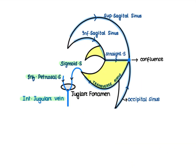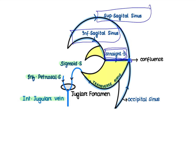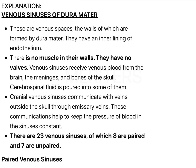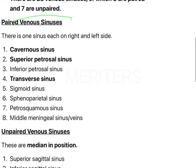Looking at another view, you can see the superior sagittal sinus and inferior sagittal sinus meeting with the straight sinus at a confluence point. The occipital sinus also comes to this confluence. The transverse sinus then meets the sigmoid sinus, and from the jugular foramen the internal jugular vein emerges. The inferior petrosal sinus drains into the internal jugular vein.